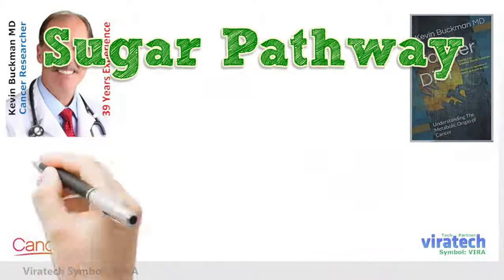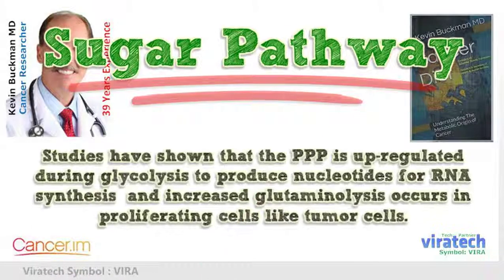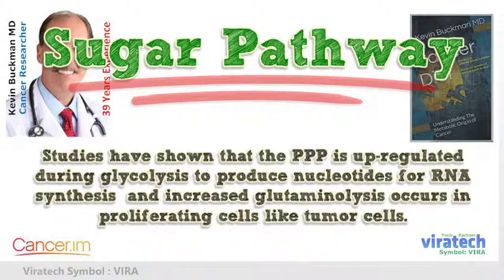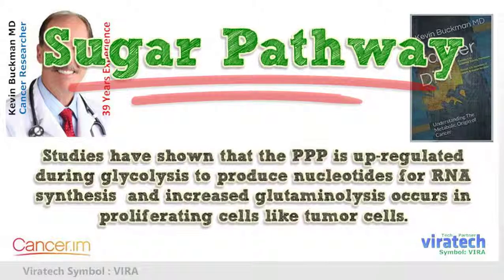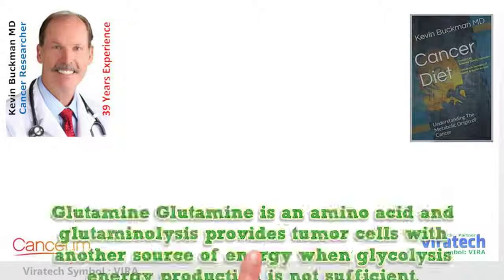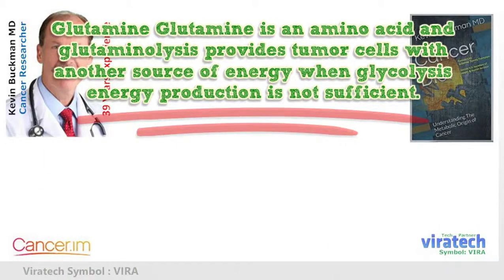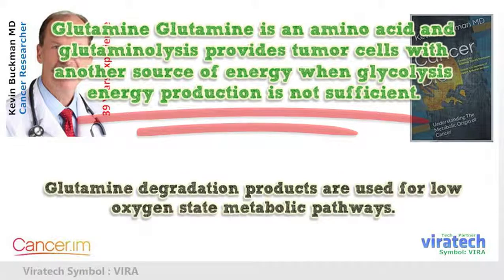Studies have shown that the pentose phosphate pathway (PPP) is upregulated during glycolysis to produce nucleotides for RNA synthesis, and increased glutaminolysis occurs in proliferating cells like tumor cells. Glutamine is an amino acid, and glutaminolysis provides tumor cells with another source of energy when glycolysis energy production is not sufficient. Glutamine degradation products are used for low-oxygen state metabolic pathways.